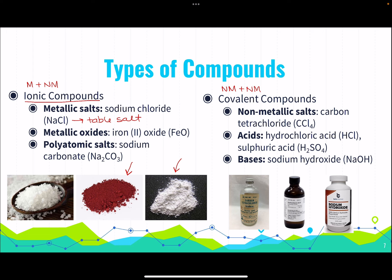For covalent compounds, we can have non-metallic salts like carbon tetrachloride, which is a solvent; acids like hydrochloric acid or sulfuric acid that we use in the lab; and bases like sodium hydroxide. Every compound has a molecular formula describing the elements forming it and how many there are. For example, sodium carbonate has two sodiums, one carbon, and three oxygens.